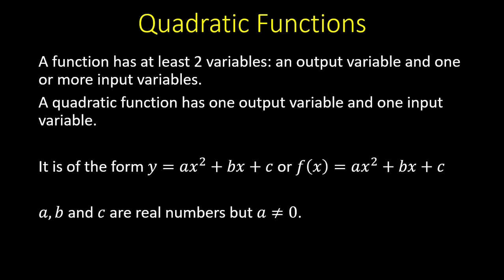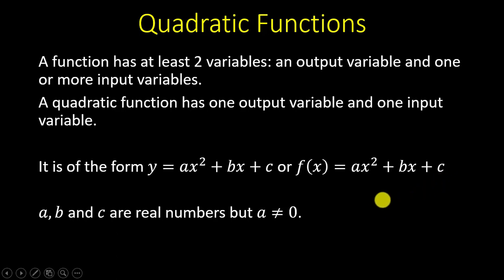In a quadratic function, a must never be equal to zero. We shall consider the behavior of the coefficient of x squared, the coefficient of x, and of course the constant c. Through that illustration you will understand why a must never be equal to zero.